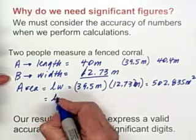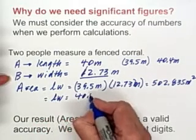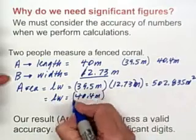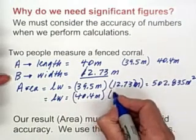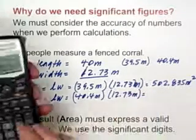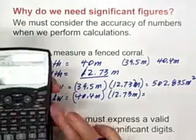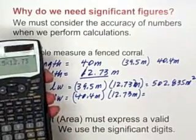Now, if we use the other measurement, 40.4 meters for the length, and we're still going to use the 12.73 meters for the width,